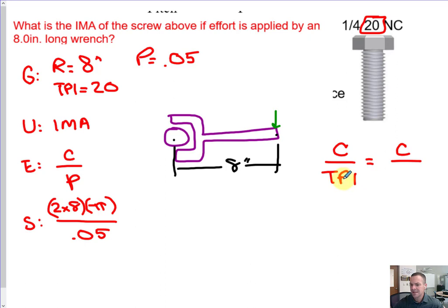Now, let's pause for a second, because the most common mistake is that students will do circumference divided by this number. This number is TPI. That's not the equation. The equation is circumference divided by pitch. And you must recall that to get pitch, pitch is equal to 1 divided by threads per inch. Make sure that you do not do circumference divided by threads per inch. You do circumference divided by pitch, which is 1 over threads per inch.